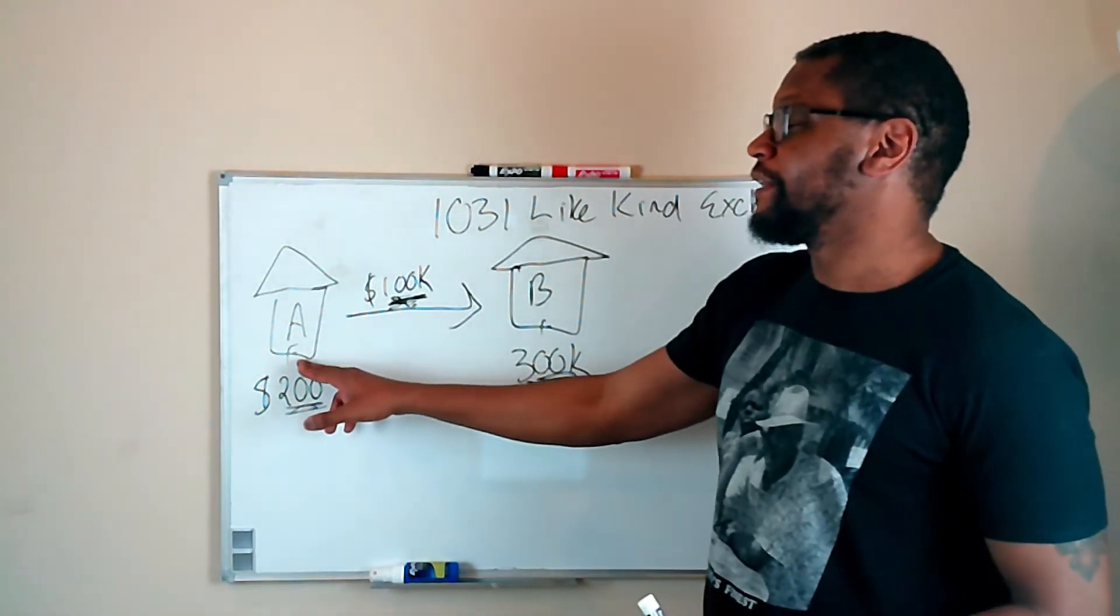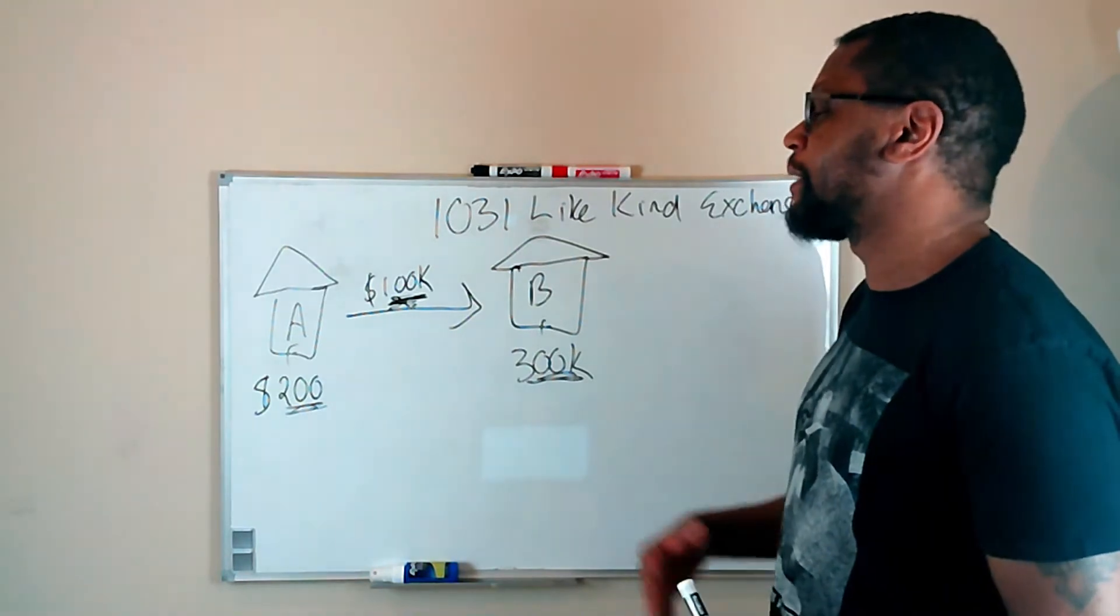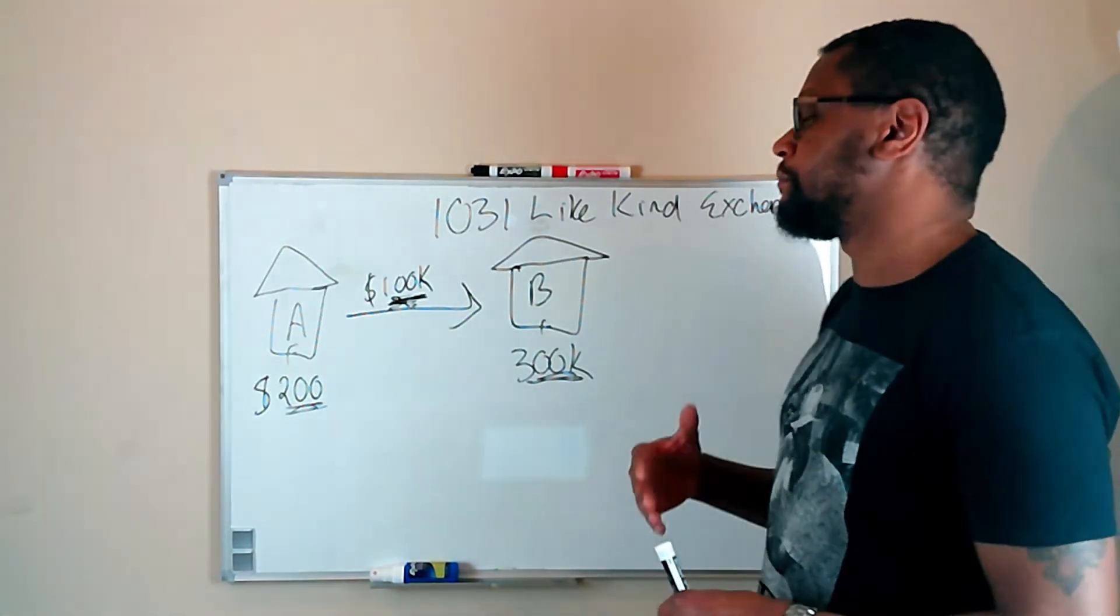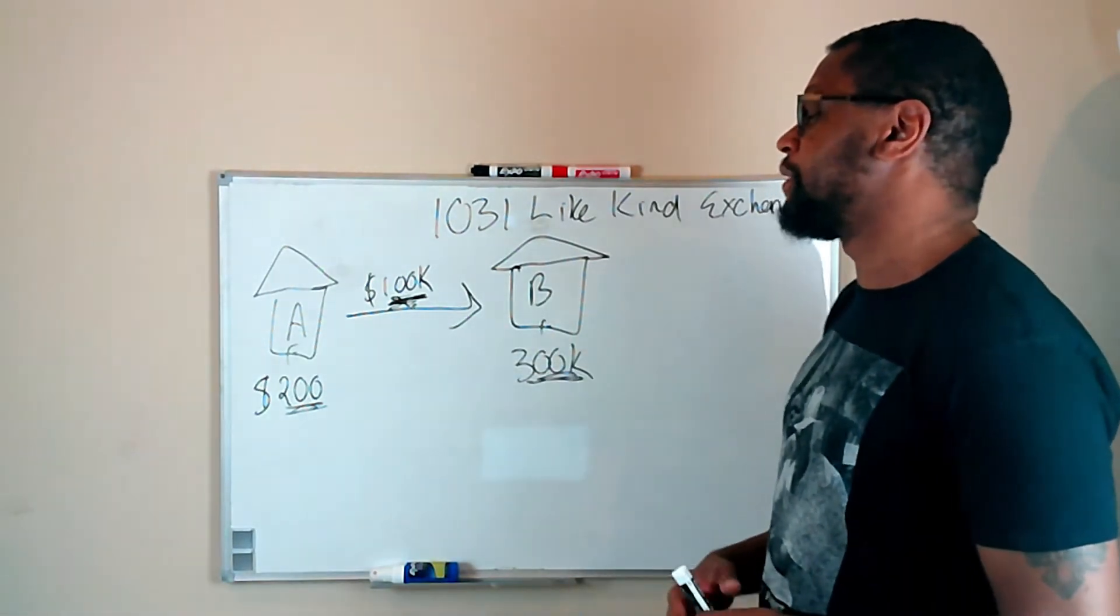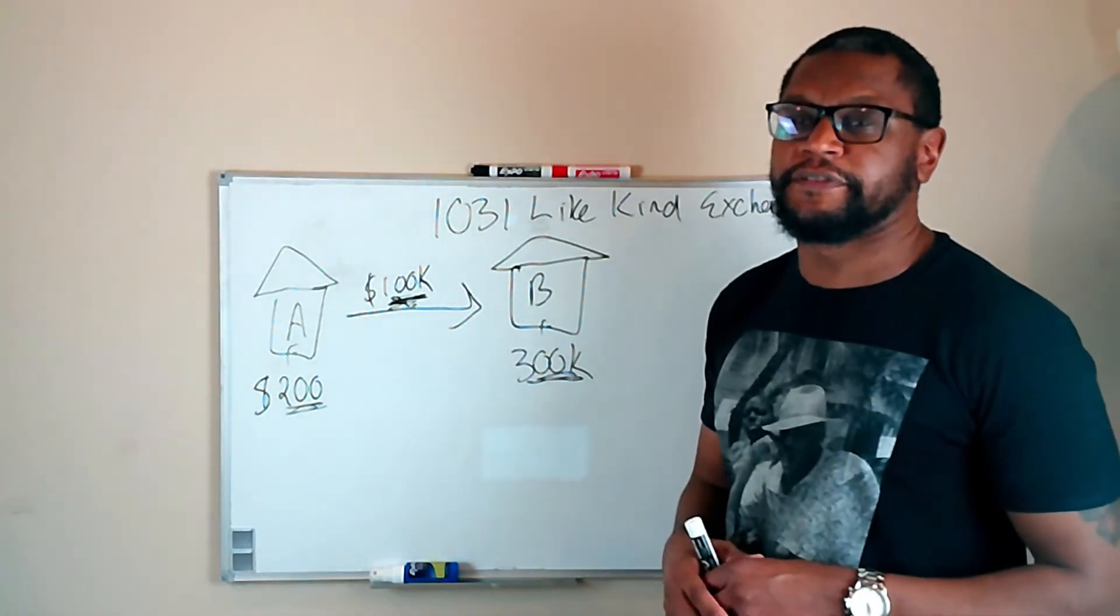So rental property A, let's say my cash flow was $550 a month. By purchasing a larger property, I should be able to improve my cash flow from $550 a month, potentially to let's say $700, $800 a month. So that's the first benefit.